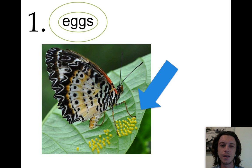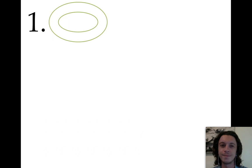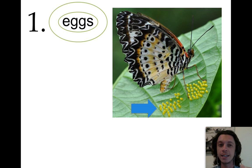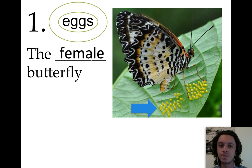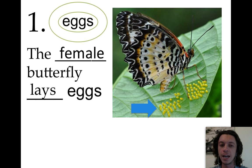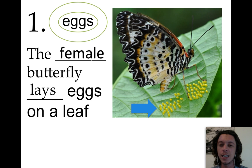Step one is called eggs. This is a mature female butterfly. What does it do? It lays eggs. So the female butterfly lays eggs on a leaf. That's step one.